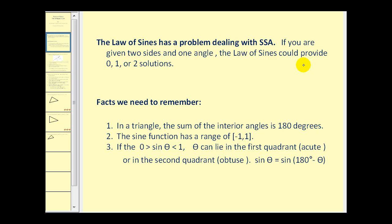A couple of things we need to remember before we start: the sum of the interior angles of a triangle is 180 degrees. The sine function will only return values in the closed interval from negative one to one. And lastly, if sine theta is between zero and one, theta can lie in the first quadrant as an acute angle, and also in the second quadrant as an obtuse angle.